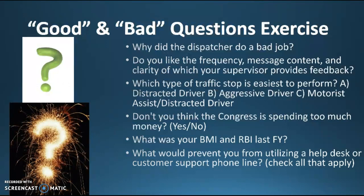This is where we might want to separate each of those items and do a different question on each. The third bullet: 'Which type of traffic stop is easiest to perform? A) distracted driver, B) aggressive driver, C) motorist assist, distracted driver.' This is what we call a mutually exclusive problem — each of those answers should be exclusive from the other. A and C overlap because they both have the words 'distracted driver' in them, so we wouldn't really be able to distinguish those two very well.